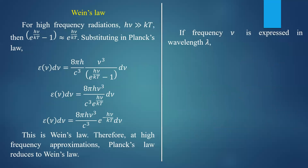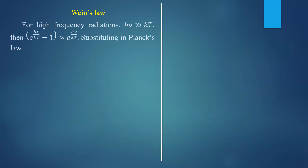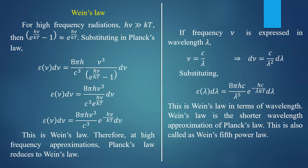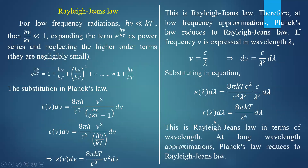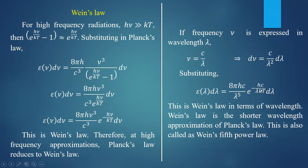To conclude: at longer wavelength approximation, Planck's law reduces to Rayleigh-Jeans law, and at shorter wavelength approximation, Planck's law reduces to Wien's law. In the shorter wavelength region, energy density is inversely proportional to λ⁵, whereas in the longer wavelength approximation, ε_λ is inversely proportional to only λ⁴ with no exponential term. This is the key difference between Rayleigh-Jeans law and Wien's fifth power law.